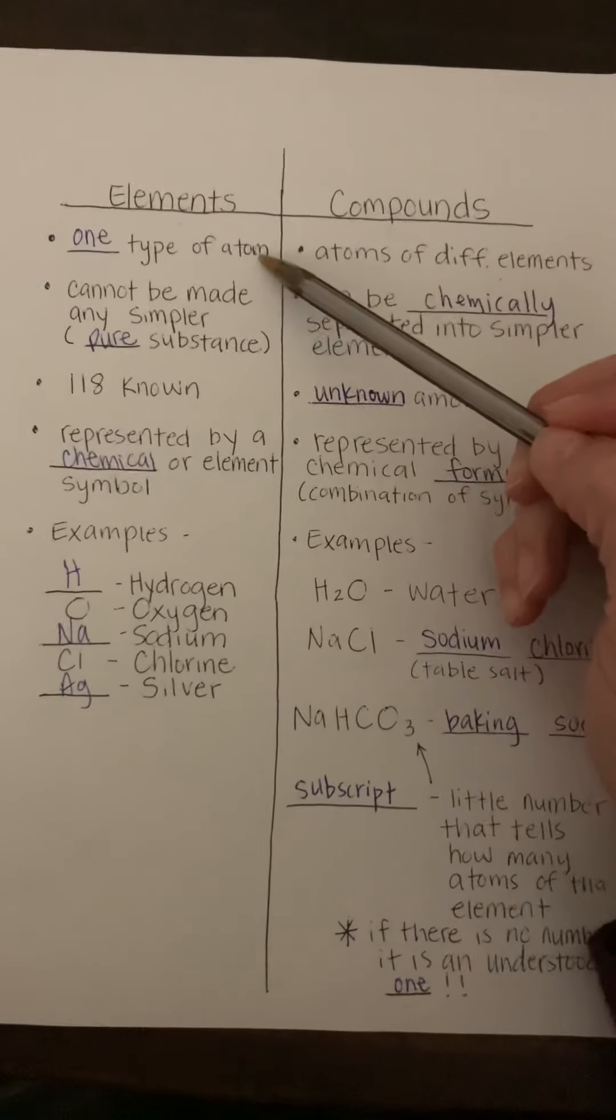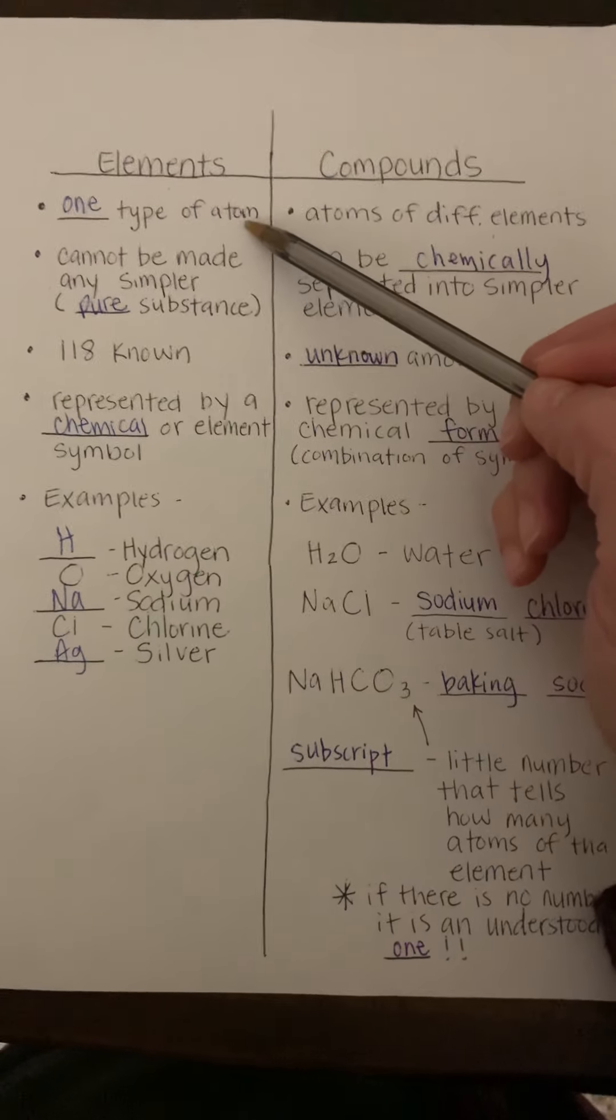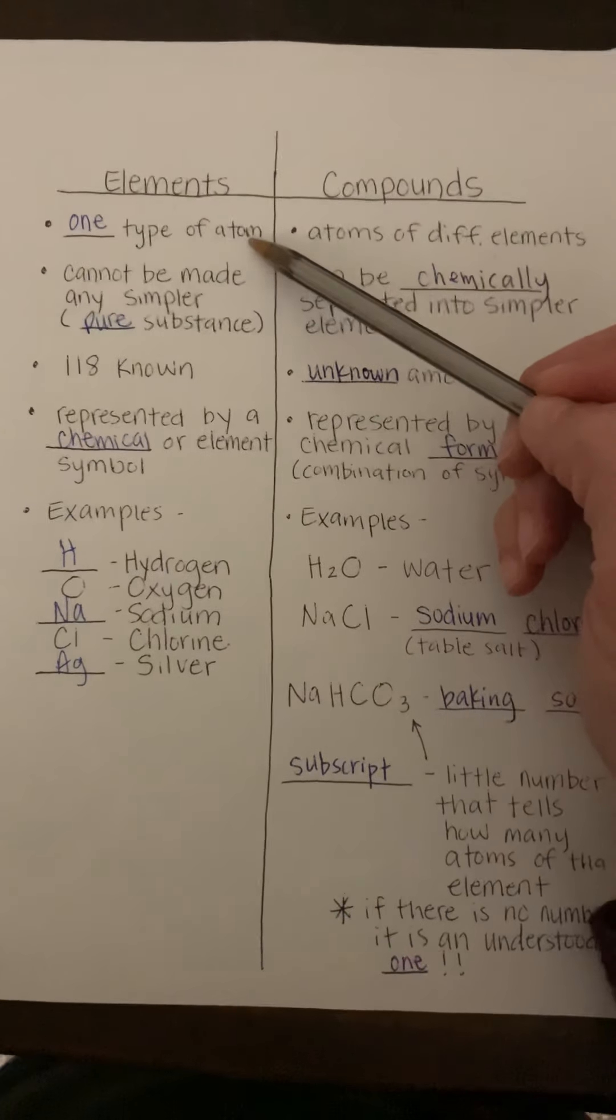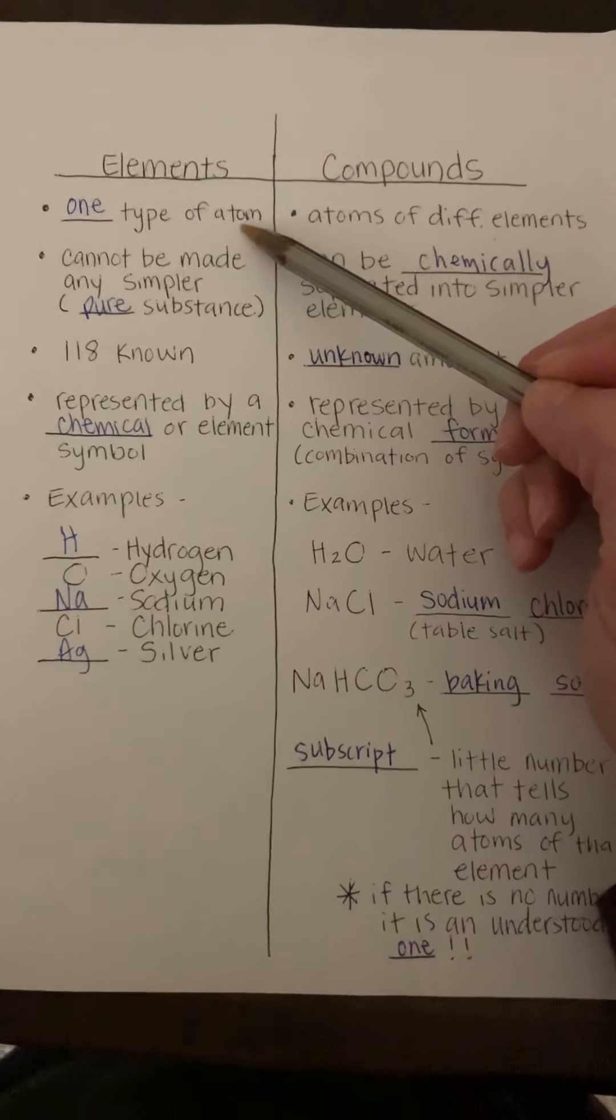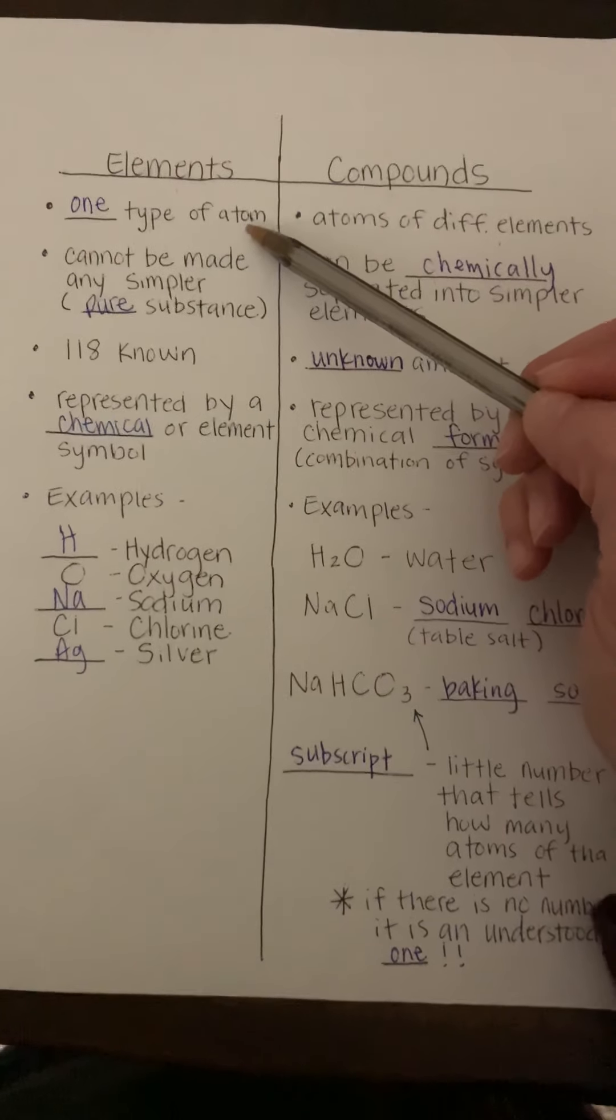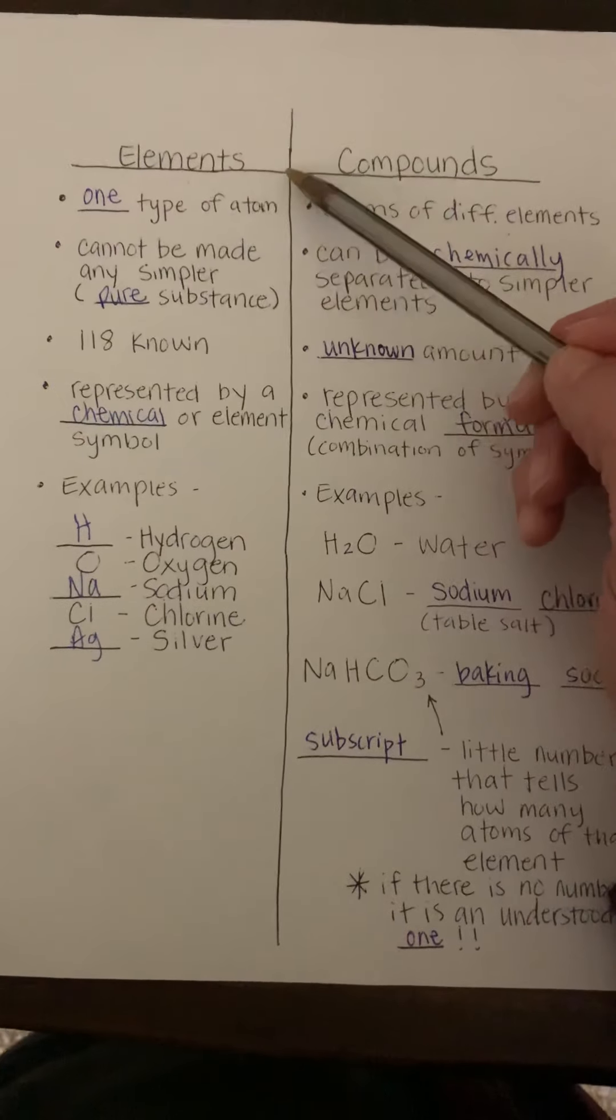So elements - we're going to talk about how they're only made of one type of atom. Now we've mentioned this before, how oxygen is only made of oxygen atoms, carbon is only made of carbon atoms, helium is only made of helium atoms, and so on and so forth.